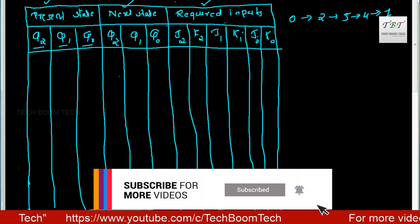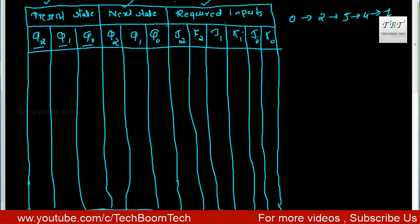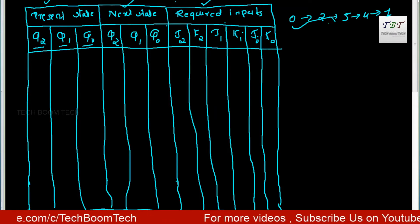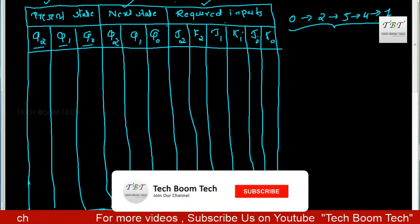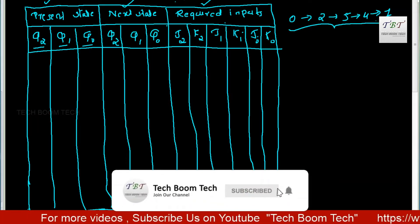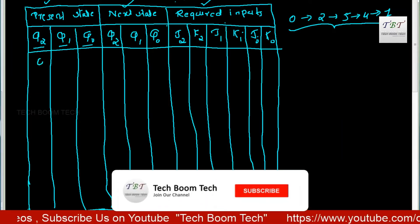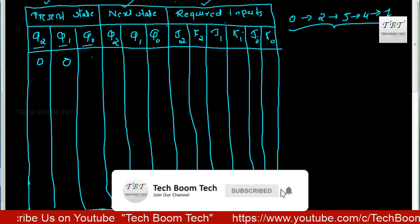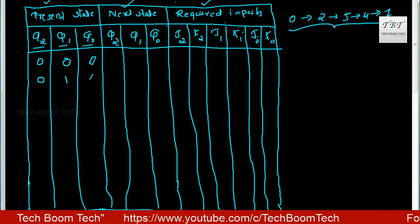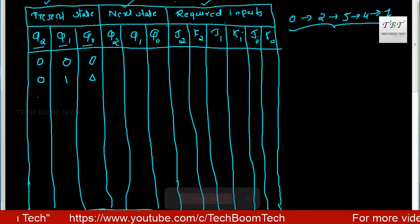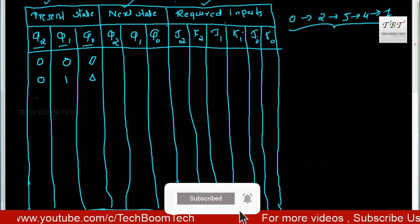We are going to list the present states. The counter has valid states. Even though it is a 3-bit counter, we identify only the valid states. Valid state 1 is 0,0,0. Valid state 2 is 0,1,0. State 3 is not a valid state, and state 2 is confirmed as a valid state.